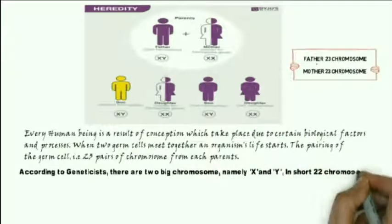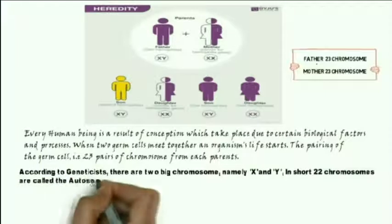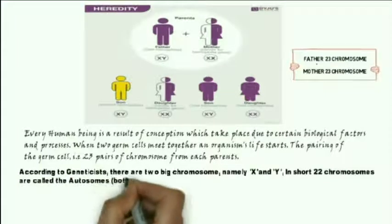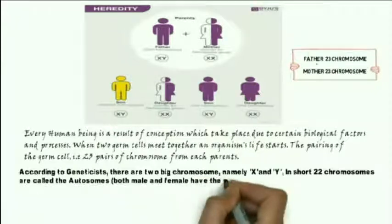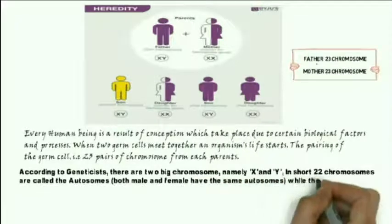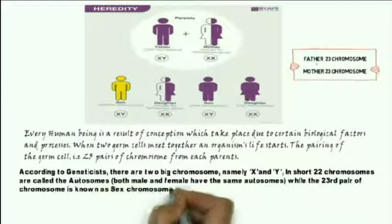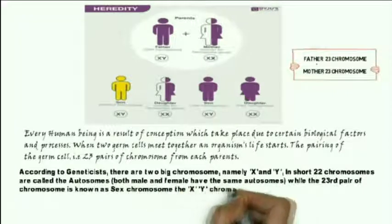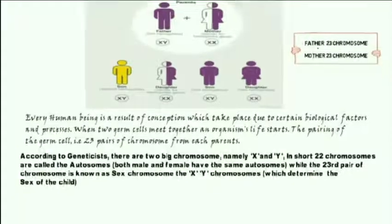In short, 22 pairs of chromosomes are called autosomes, meaning both male and female have the same autosomes. The 23rd pair of chromosomes, known as sex chromosomes — the X and Y chromosomes — determines the sex of a child.